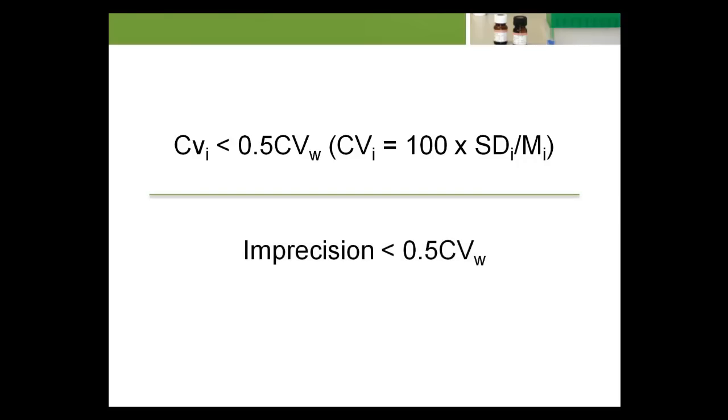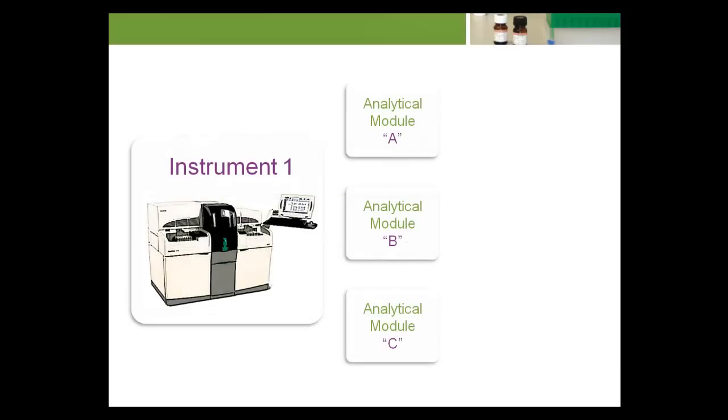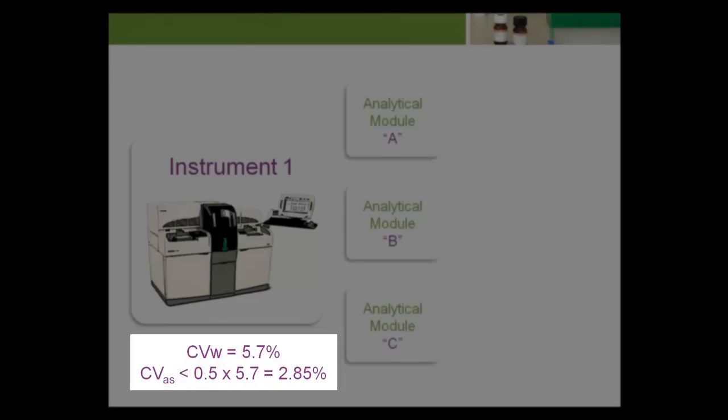On the other hand, if modules have different means, bias exists between modules. The imprecision of the individual modules must be substantially less than 0.5 CVW for the total analytical system to meet the goal. For example, assume a lab has three analytical modules that test glucose. The within-individual biological variation for glucose reported by Ricos is CVW equals 5.7%. Therefore, the lab's goal is CVAS less than 0.5 times 5.7 equals 2.85%.